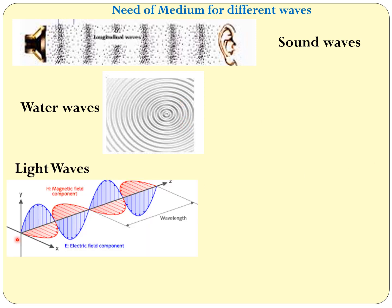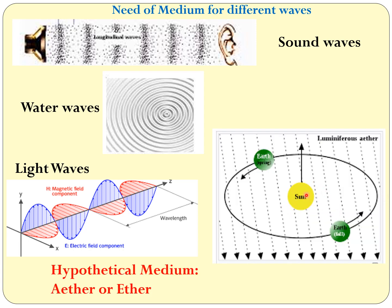Light is also a wave — an electromagnetic wave — and it has electric field and magnetic field vectors perpendicular to each other. Because light is coming from the sun to earth and there is empty space or vacuum between them, it was assumed that there is some hypothetical medium, which was named as luminiferous ether, or simply ether.